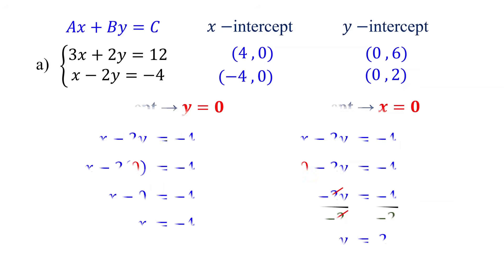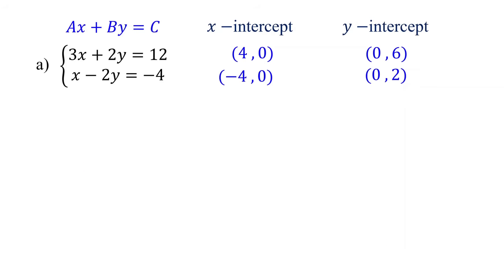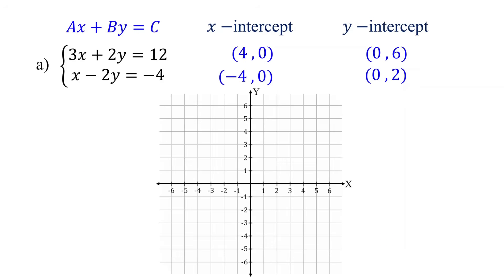Now that we have our intercepts for both equations, the next step is to plot them on a graph. For the first equation, plot the x-intercept at (4, 0) and the y-intercept at (0, 6). Then connect the two points with a straight line. This line represents the first equation.